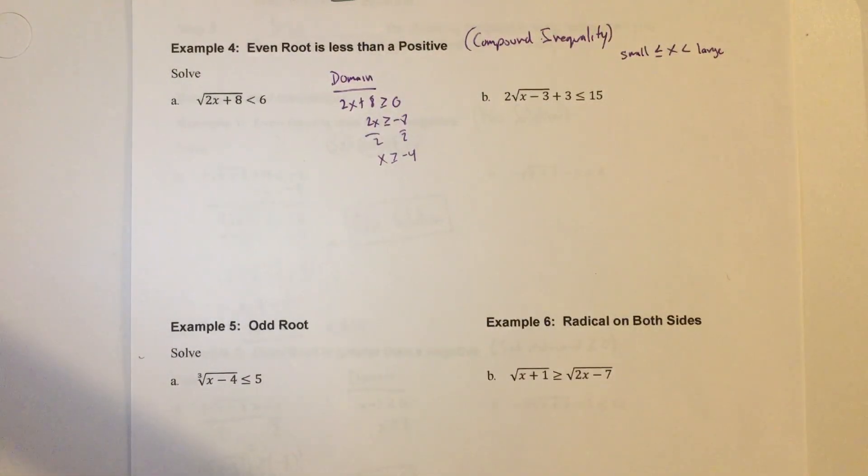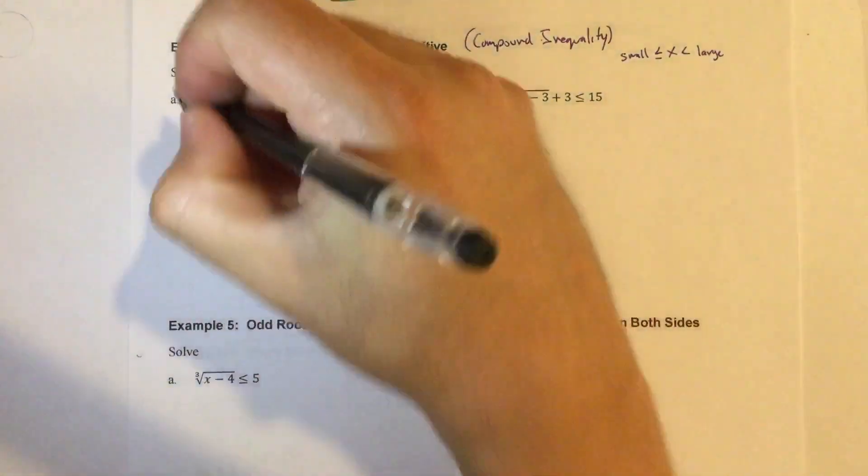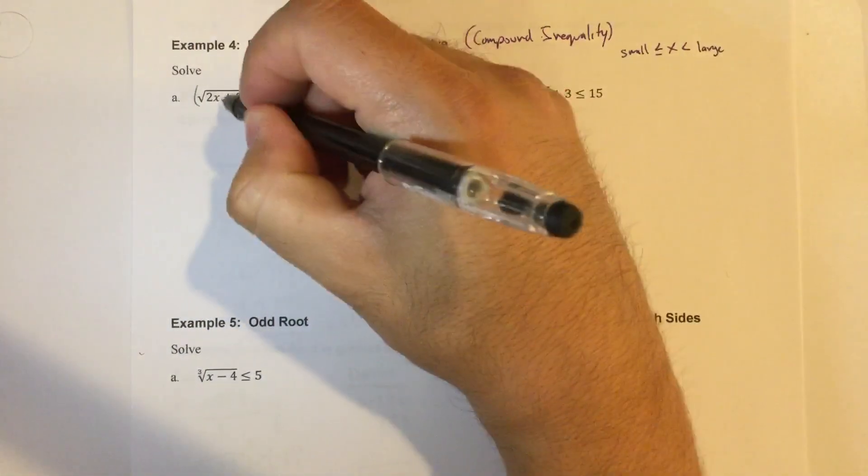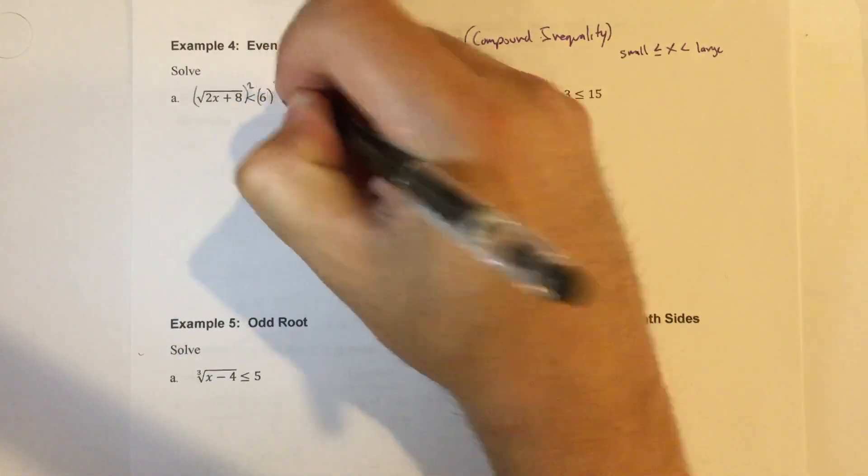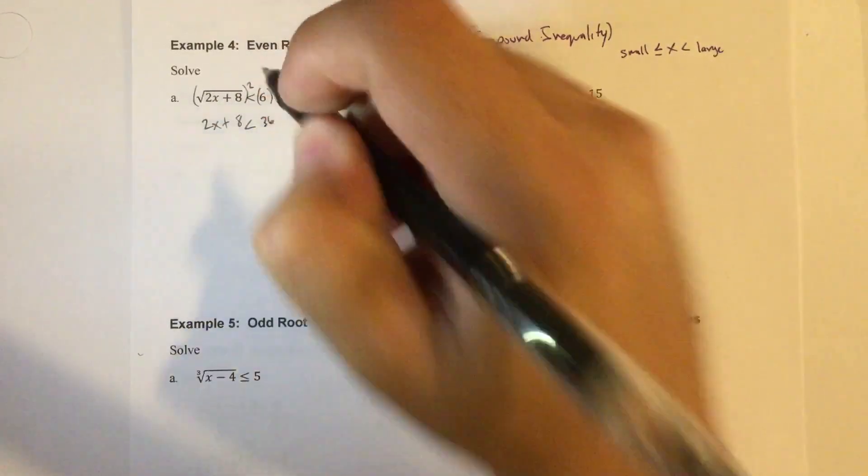Okay, so when I'm solving this type of problem here, first thing I'm going to do, and once again it's already isolated, is I'm going to raise both sides to the second power, because the inverse of a square root is a square. Cancel this out. 2x plus 8 is less than 36.